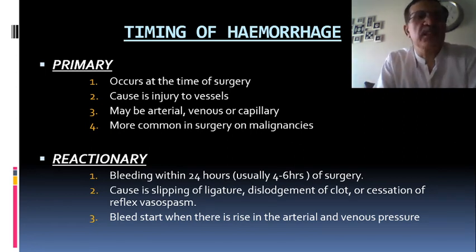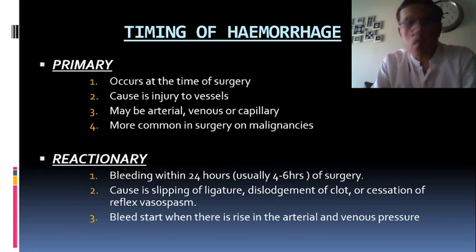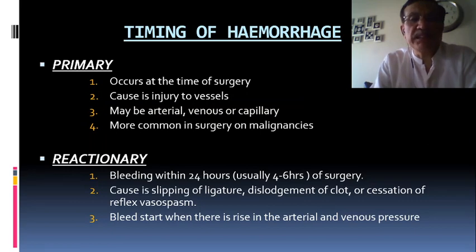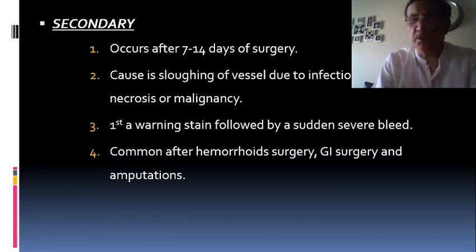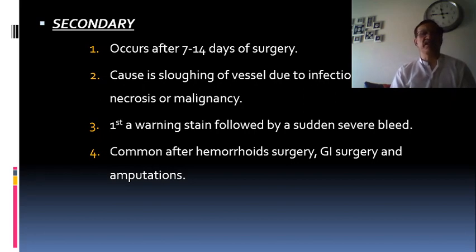By timing: Primary hemorrhage occurs at the time of surgery or injury to blood vessels — arterial, venous, or capillary — more common in surgery or malignancy. Reactionary hemorrhage is bleeding within 24 hours, especially 4 to 6 hours post-surgery, caused by a slipped ligature, dislodgement of a clot, or post-operative vasospasm — bleeding starts when arterial or venous pressure rises. Secondary hemorrhage occurs after 7 to 14 days post-surgery, caused by erosion of the vessel due to infection, pressure, or necrosis — common after hemorrhoid surgery, GI surgery, and amputations.